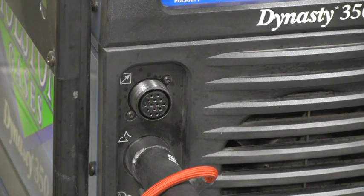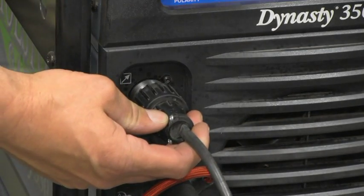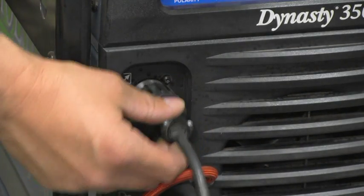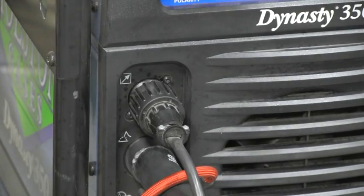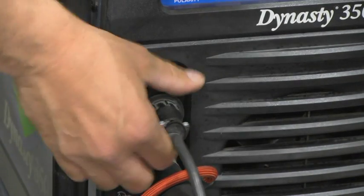So here's an example of the remote receptacle on a power source. And so to install a foot pedal, or thumb control, or a remote, we would just take the plug connection, mate it with the keyway of the 14-pin output receptacle, and then simply just screw it on.